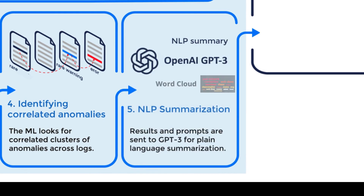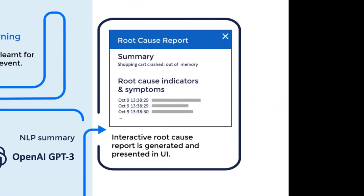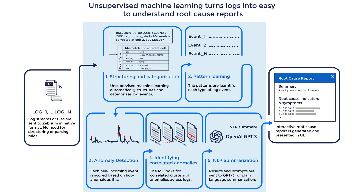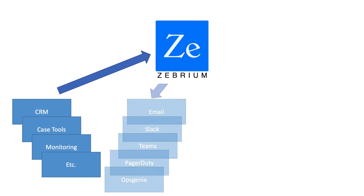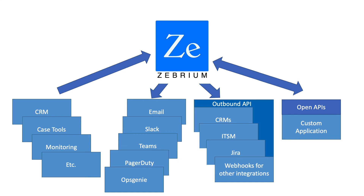Next, we use GPT-3 to generate a plain language summary of the problem. We also generate the word cloud at this stage. And finally, this is all put together into an interactive root cause report that is available in the UI. Zebrium integrates with almost any kind of CRM, bug tracking, or other application via a comprehensive set of open APIs, as well as many built-in integrations.